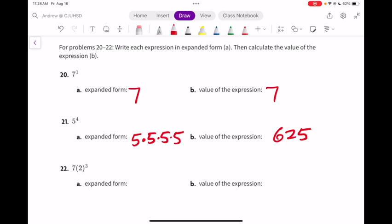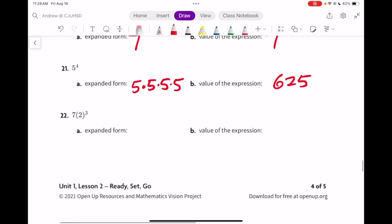You can get that by just multiplying that all out. 5 times 5 is 25, 25 times 5 is 125, 125 times 5 is 625. Or, learn how to put this into your calculator. And the last one, 22.